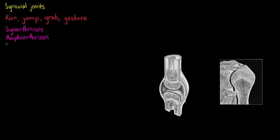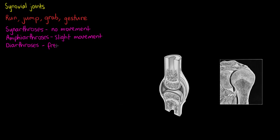We have the synarthroses, amphiarthroses, and diarthroses. The synarthroses are joints that do not allow for any movement to happen. Amphiarthroses allow a small or slight amount of movement. And diarthroses are freely movable joints and are by far the most common in the body.